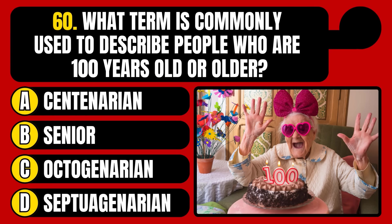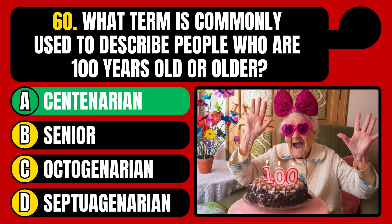What term is commonly used to describe people who are 100 years old or older? Centenarian, Senior, Octogenarian, or Septuagenarian? The correct answer is option A, Centenarian.